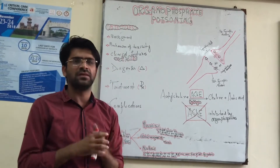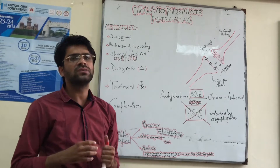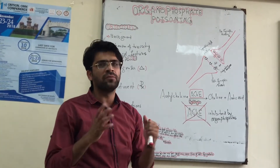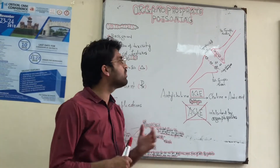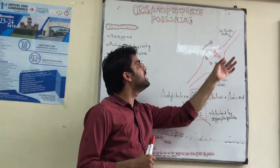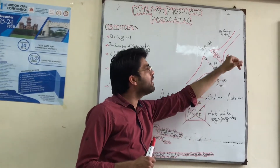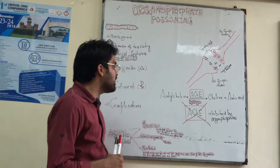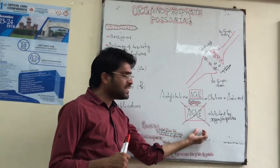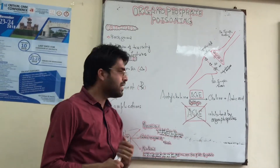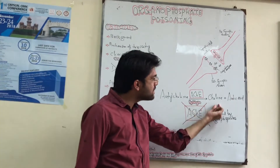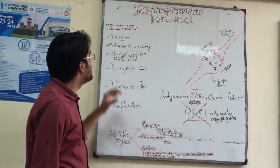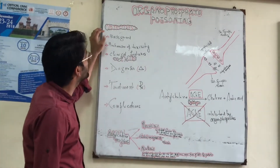Once the required action by the body is achieved, the body eliminates or removes the Acetylcholine from the synaptic cleft either by re-uptaking it via the pre-synaptic neuron or by inactivating it via Acetylcholinesterase into its inert chemicals — choline and acetic acid.